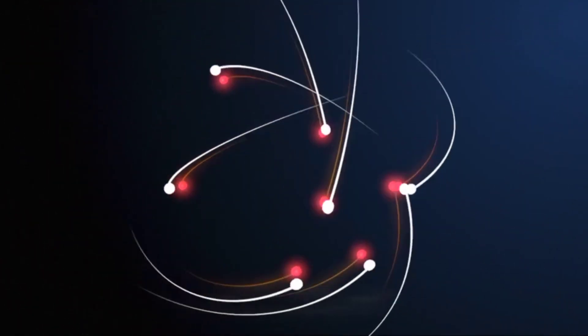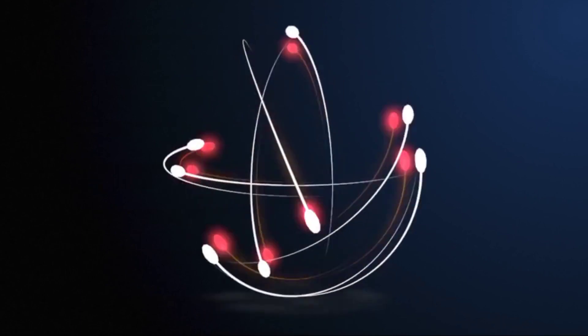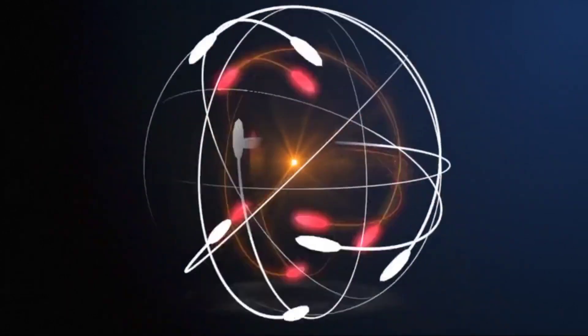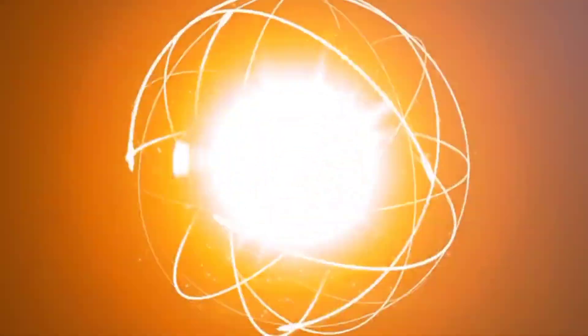Get ready for some solar fireworks. The sun is expected to undergo some major changes in 2024 that could have a significant impact on Earth. Here's what you need to know. Every 11 years, the sun's magnetic field undergoes a complete cycle.